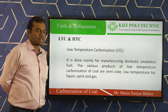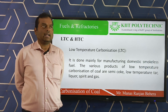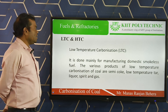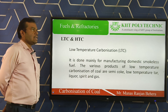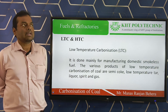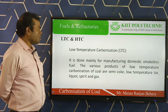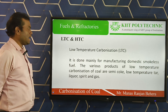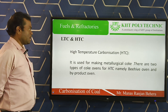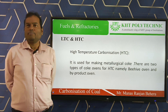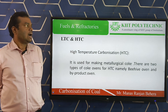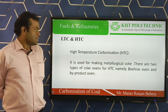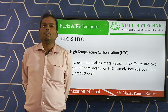Now I will discuss some salient features of LTC and HTC — low temperature carbonization and high temperature carbonization. Low temperature carbonization is done for manufacturing domestic smokeless fuel. Its products include semi-coke, low temperature tar, liquor, spirit, and gas. High temperature carbonization is used for making metallurgical coke. There are two types of coke ovens used: beehive coke ovens and byproduct coke ovens.